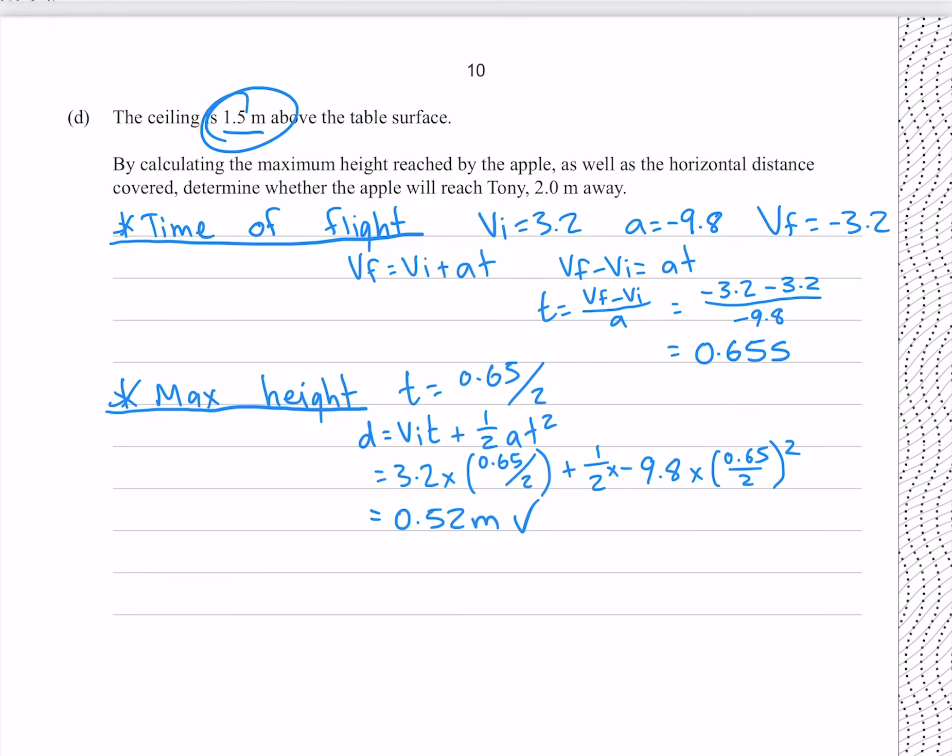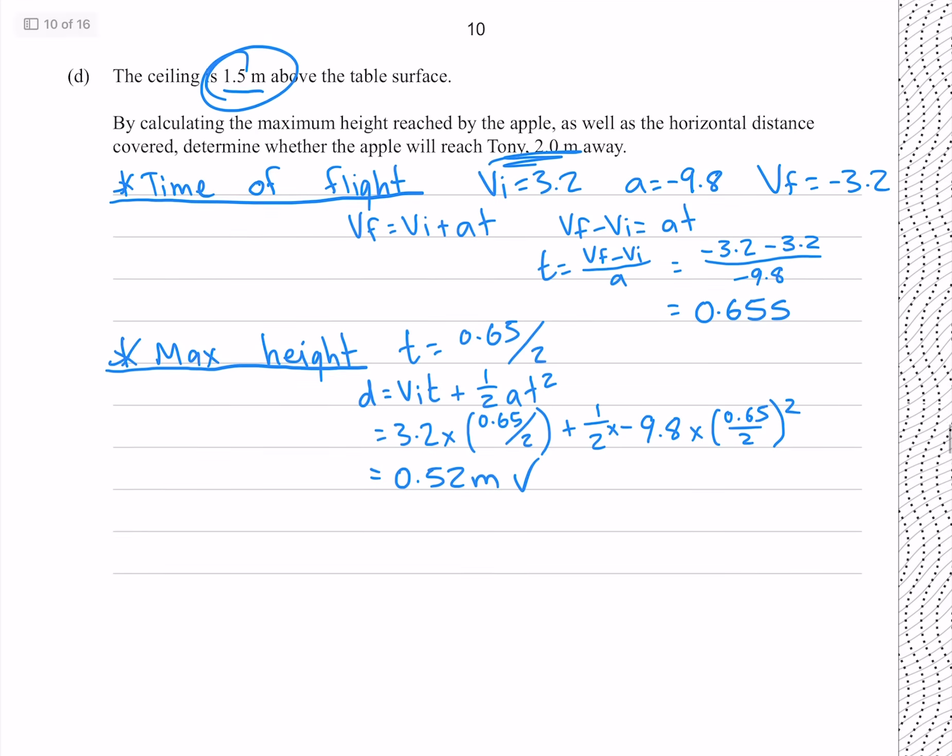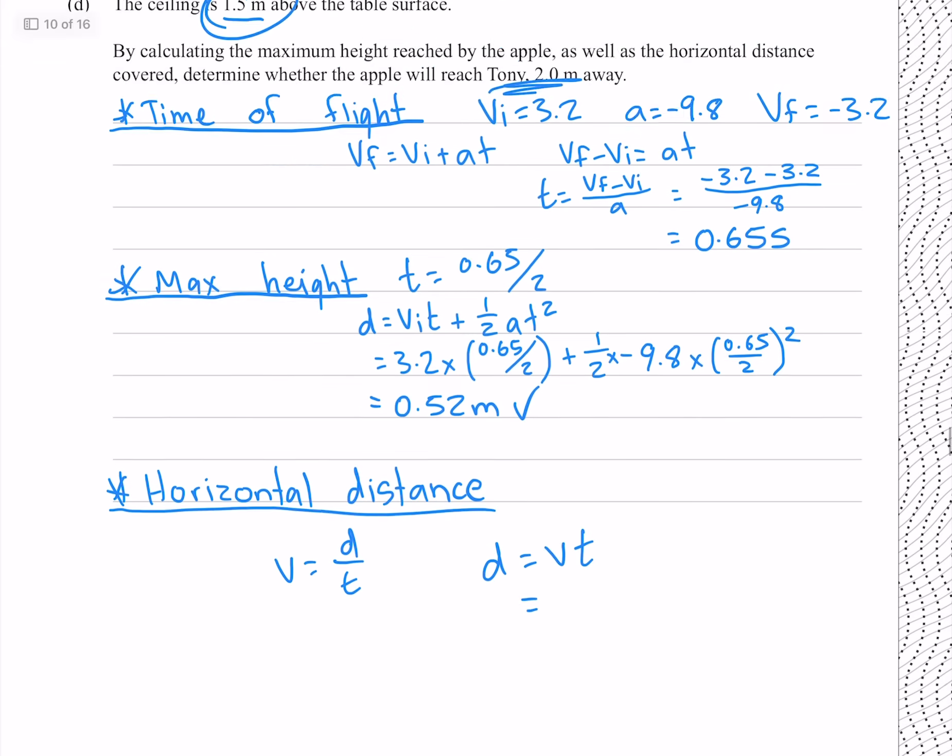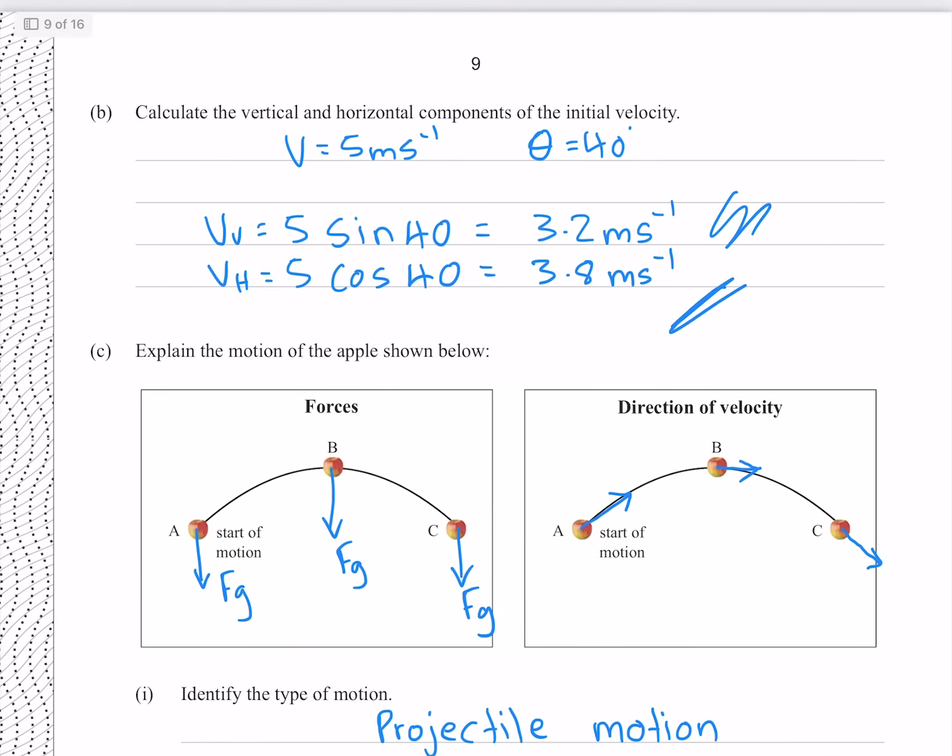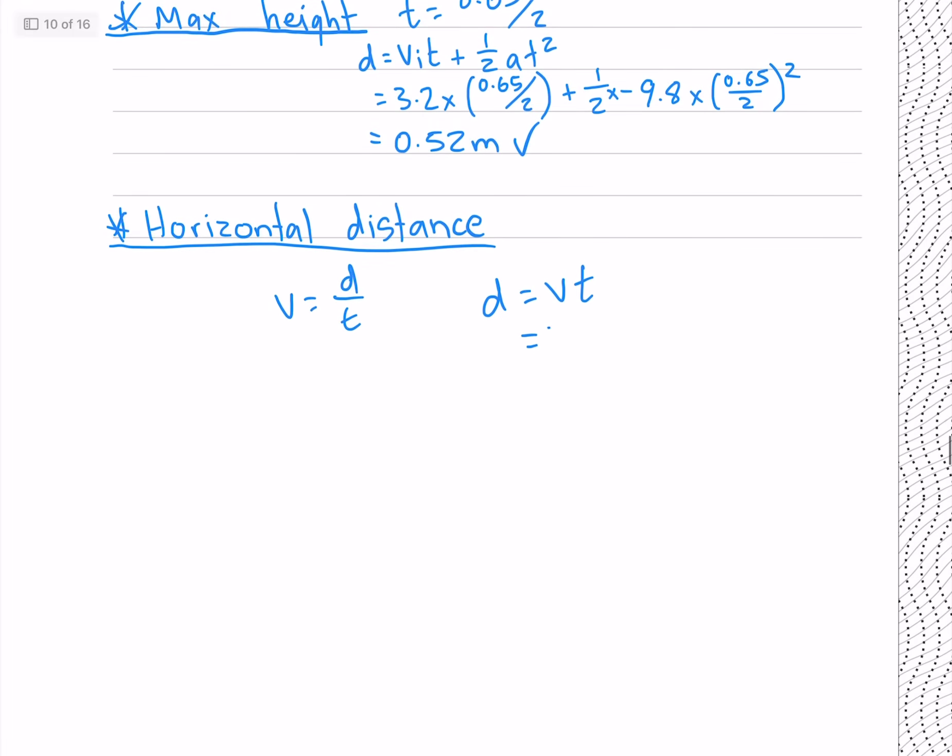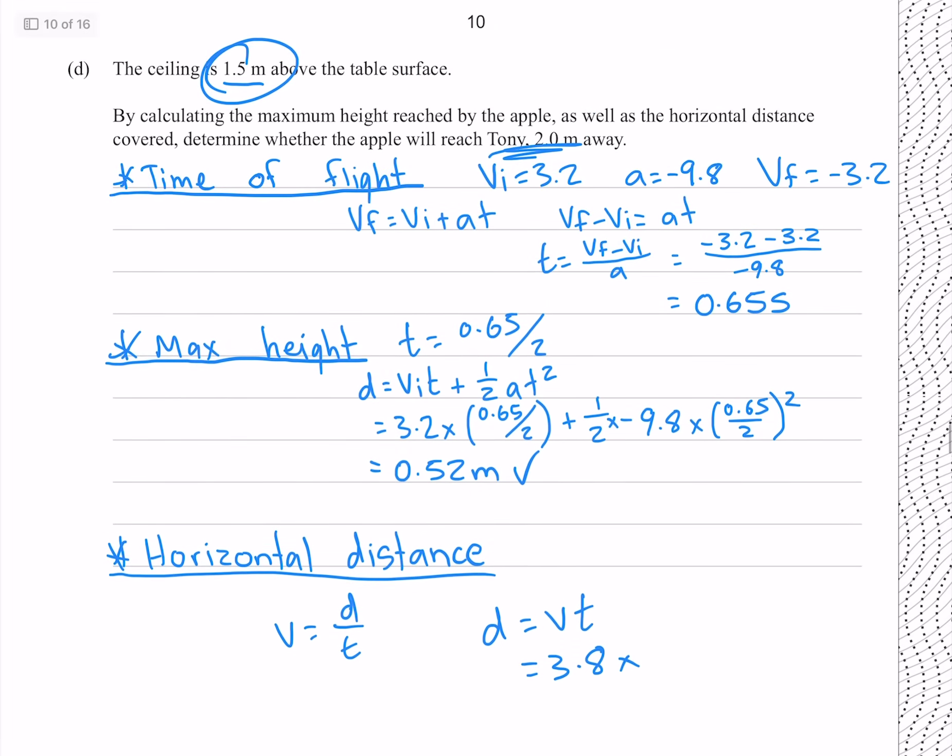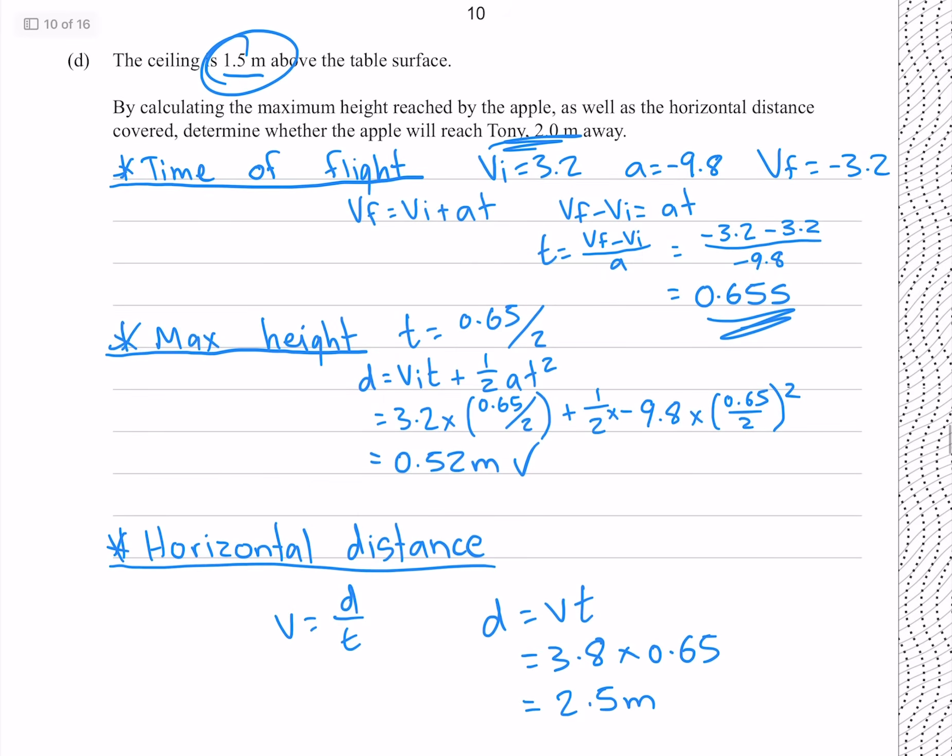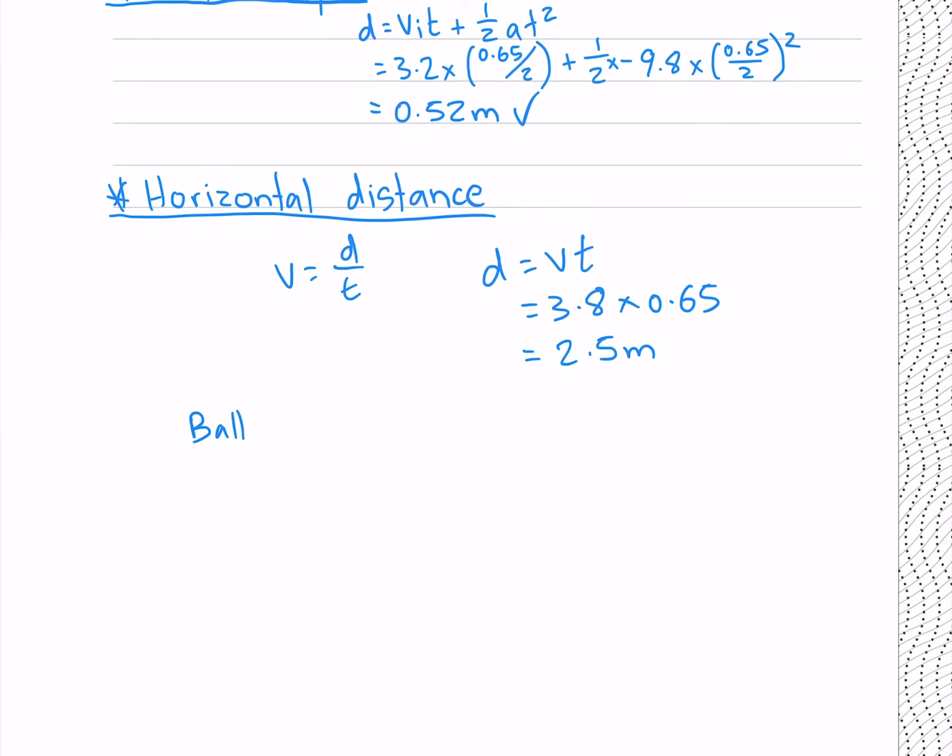And finally we need to find the horizontal distance, to determine if it's going to reach Tony two meters away. To find our horizontal distance, we can use just our velocity is distance over time, rearrange for D is VT, where our velocity is our horizontal velocity we found earlier, 3.8. And our time is the overall time, which is 0.65. Which gives me 2.5 meters to two significant figures, which is more than two meters. And so the ball not only reaches Tony, it also doesn't hit the ceiling.